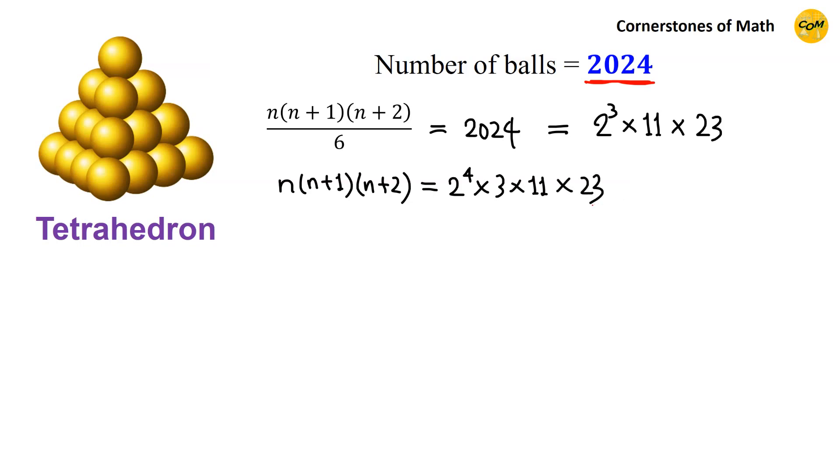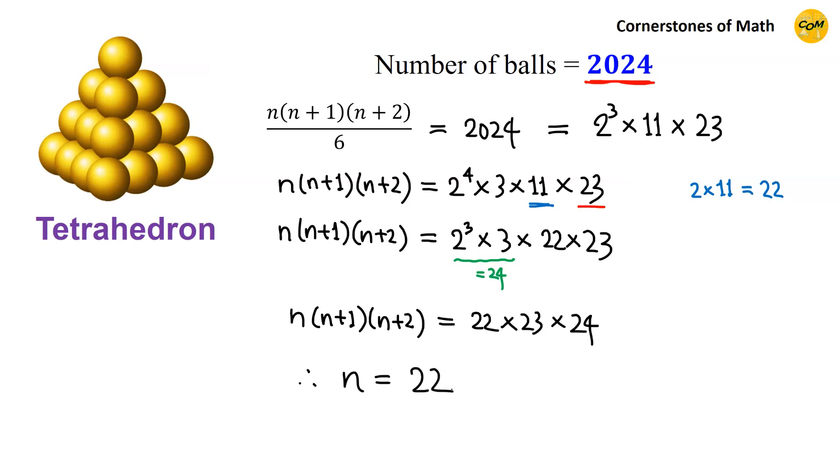Here, let us focus on the fact that we have prime factor 23. Then we have 11, and we know that 2 times 11 gives 22. So we can write, n, n plus 1, n plus 2 equals 22 times 23. Then we have 2 to the power of 3 times 3. And this part gives 24. So we have n, n plus 1, n plus 2 equals 22 times 23 times 24. Therefore, n equals 22.